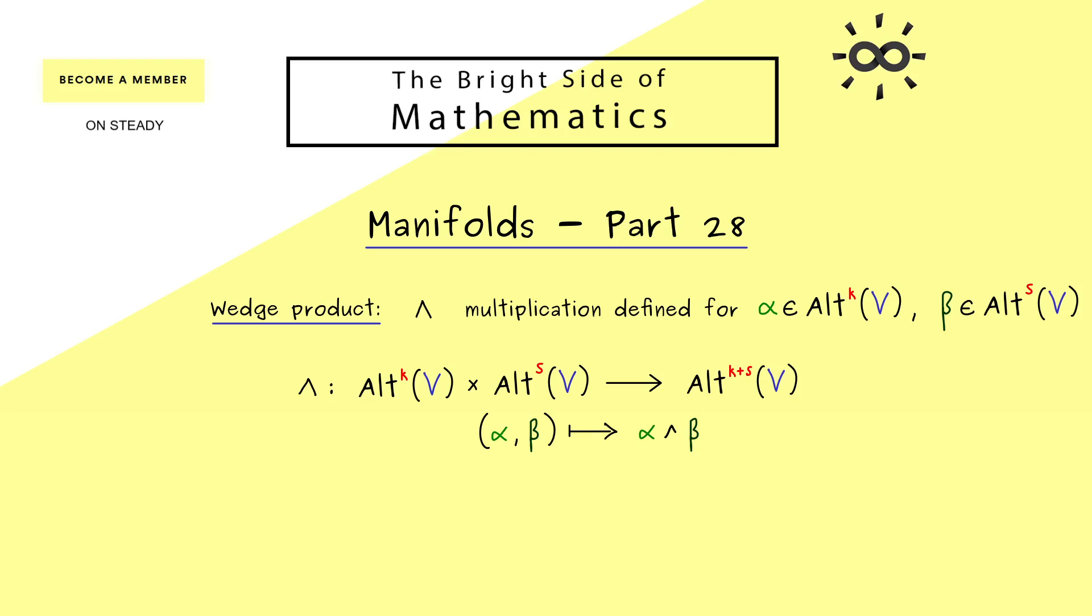Hence the new form that comes out here is denoted by alpha wedge beta. Now, an important thing we already know here is that this outcome has to be a multilinear map. More precisely, it has to be a (k+s)-linear map. This means it gets exactly k+s vectors from V as an input.